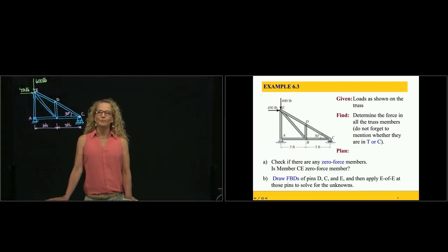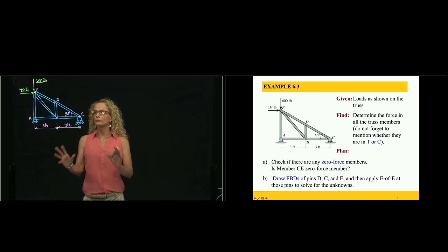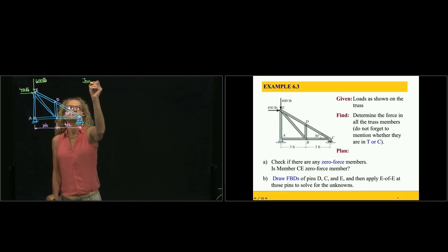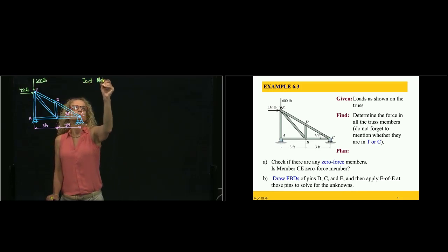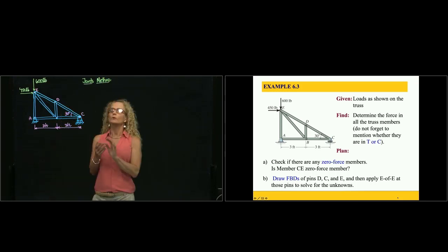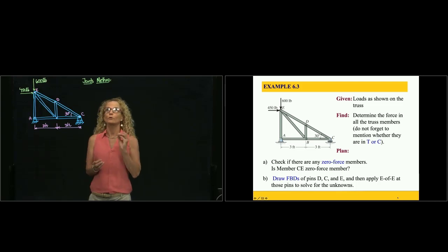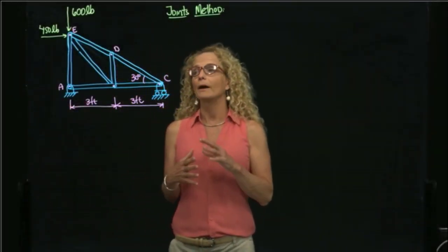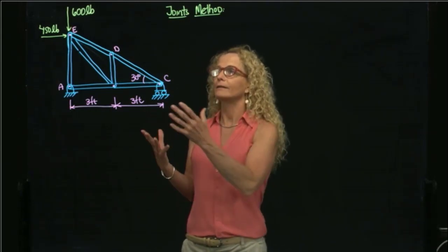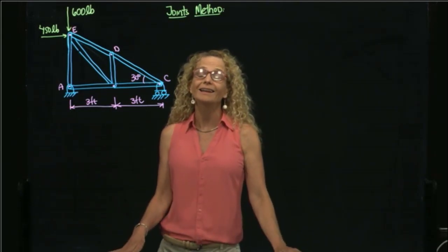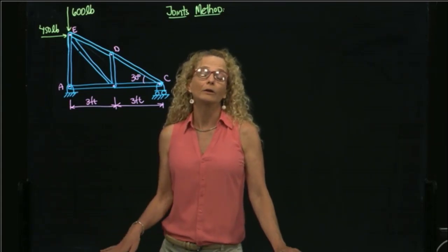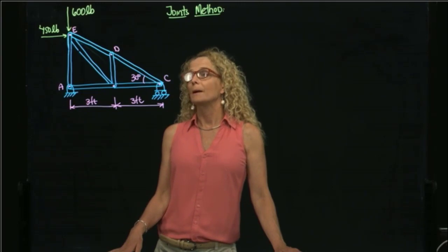This is example 6.3. We are working with trusses — in this case a simple truss. I will use the joint method. We will always assume that all members are positive in tension, and then a negative value means they are in compression. We will start by analyzing the truss to see if we have any members that do not carry any load — zero force members.